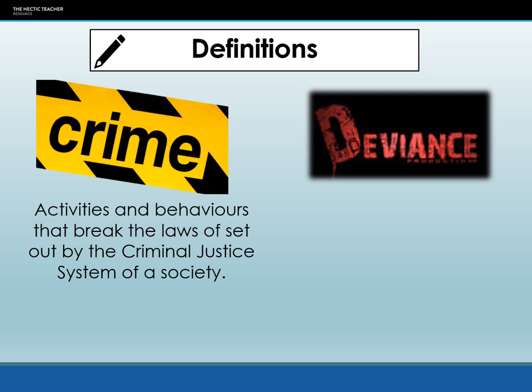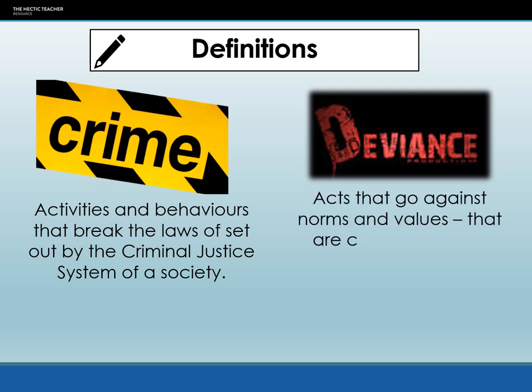It is also a criminal act to not register your child's birth. Whereas deviance is defined as acts or behaviors which go against the norms and values of society. These can also be crimes, but not always. For example, it is deviant to pick your nose in public, but you wouldn't get arrested for it. However, walking around naked in public would not only be considered deviant, but it would also get you arrested for indecent exposure.